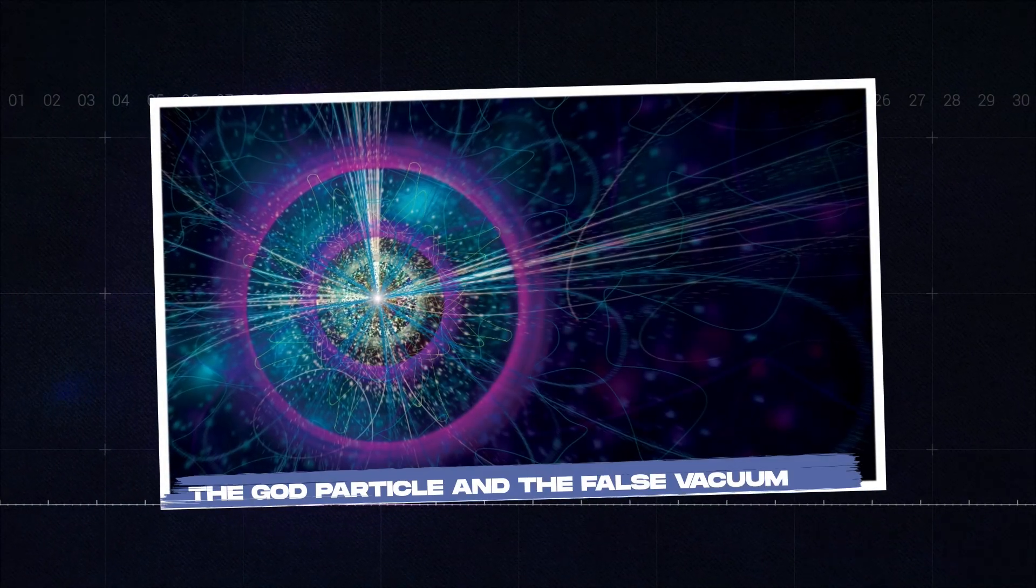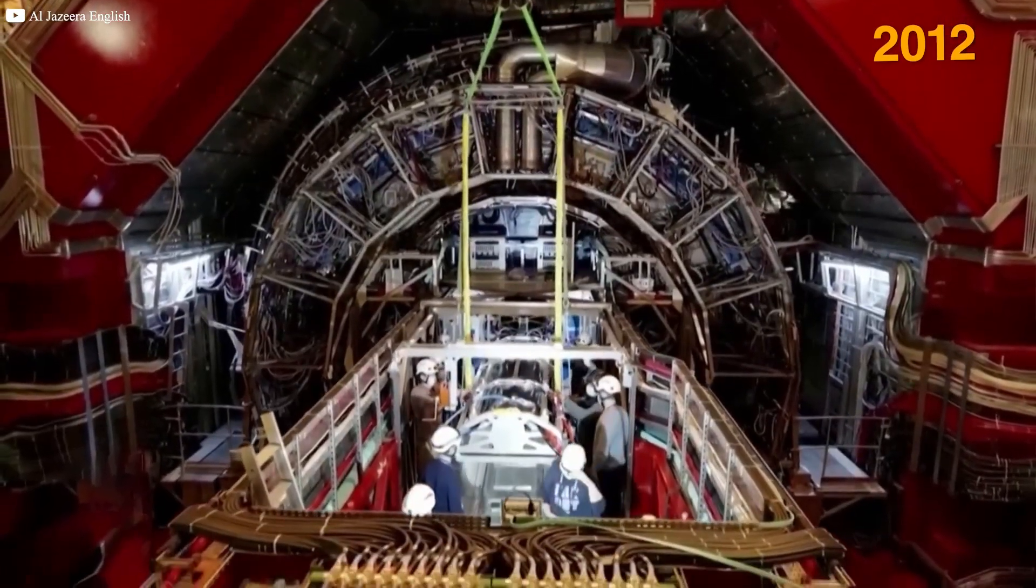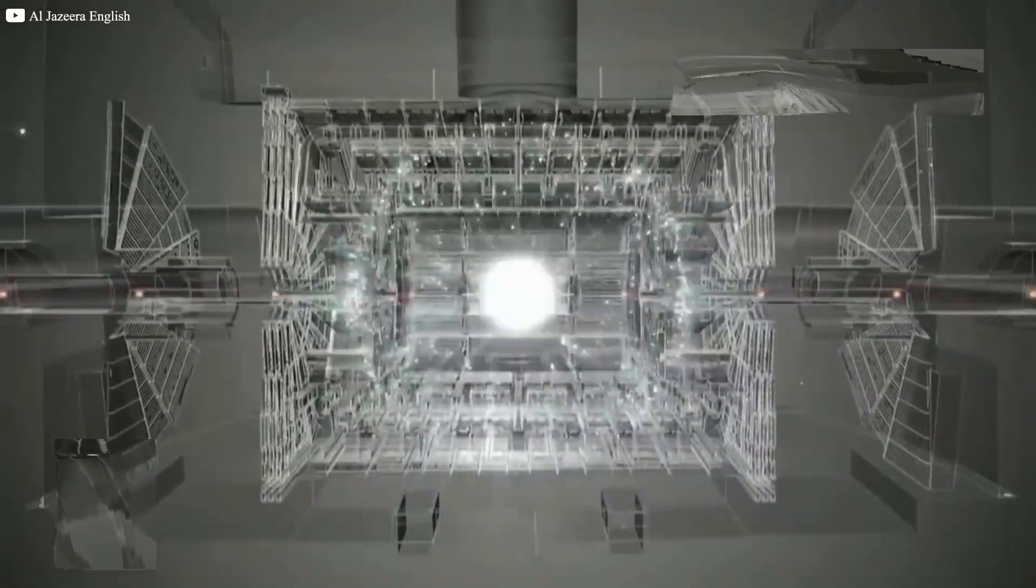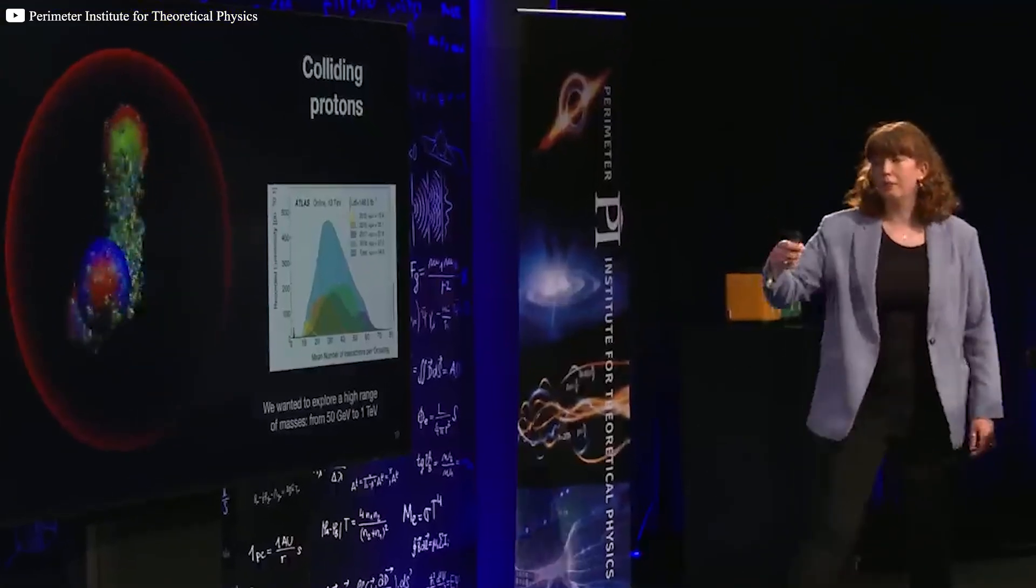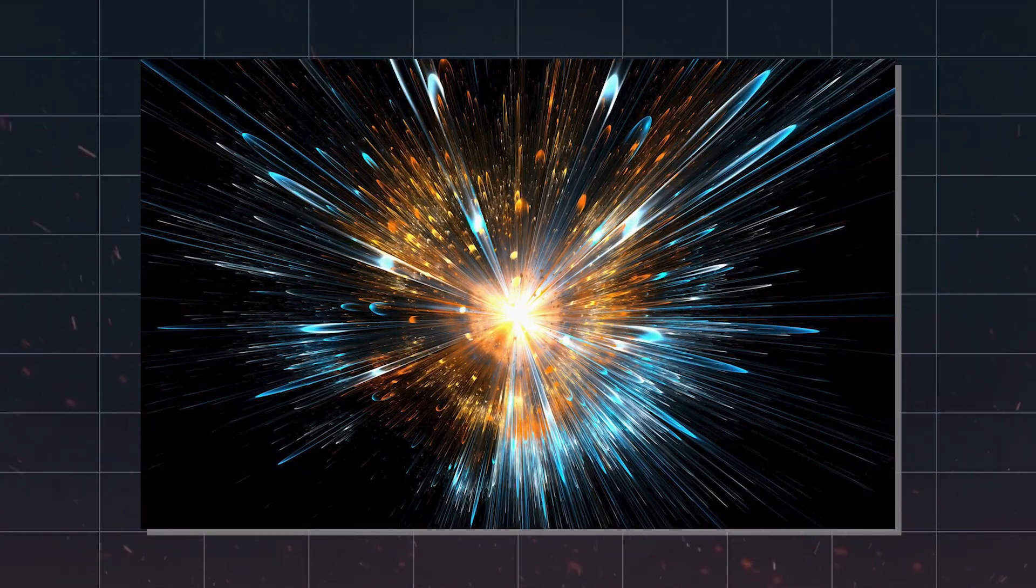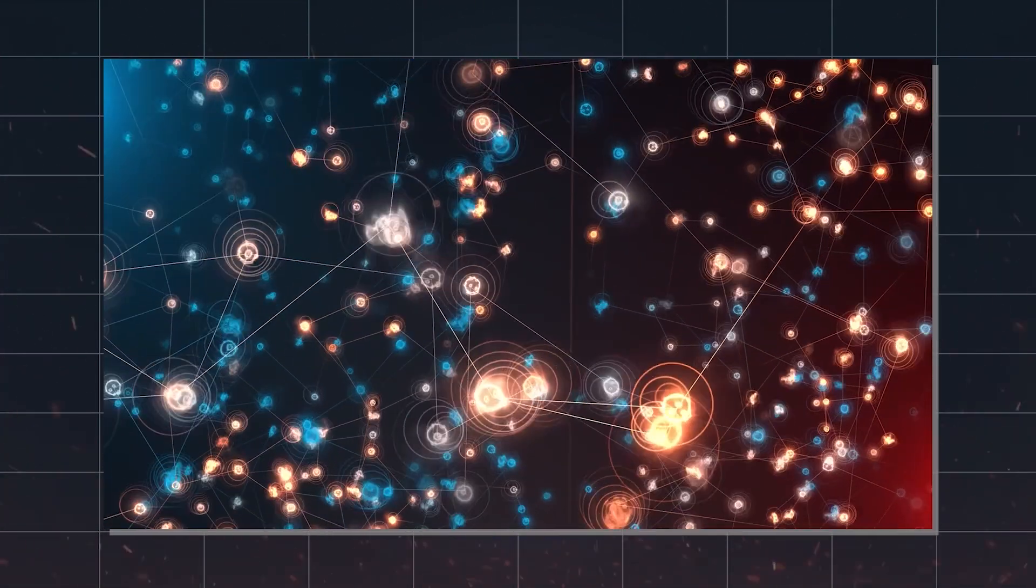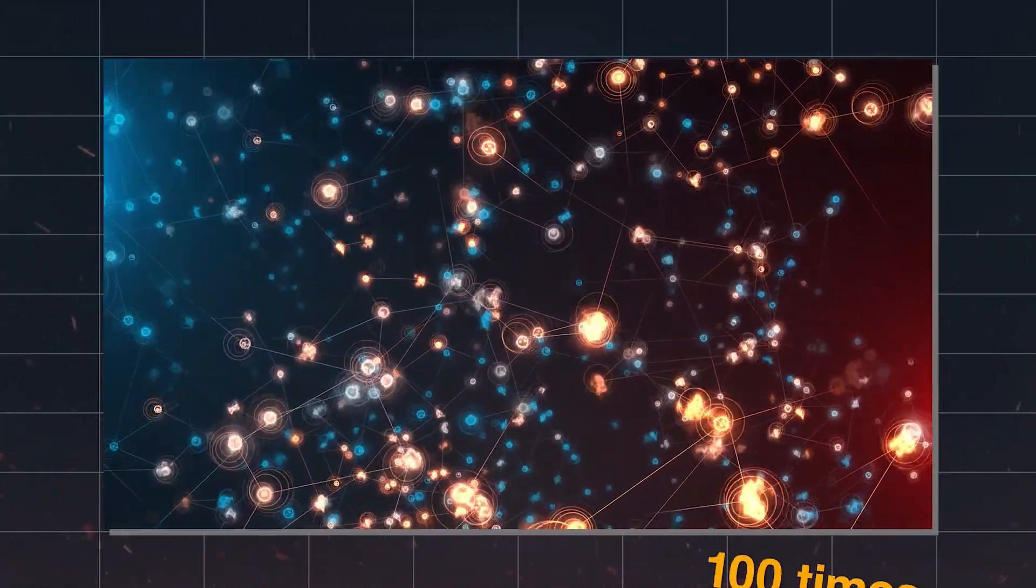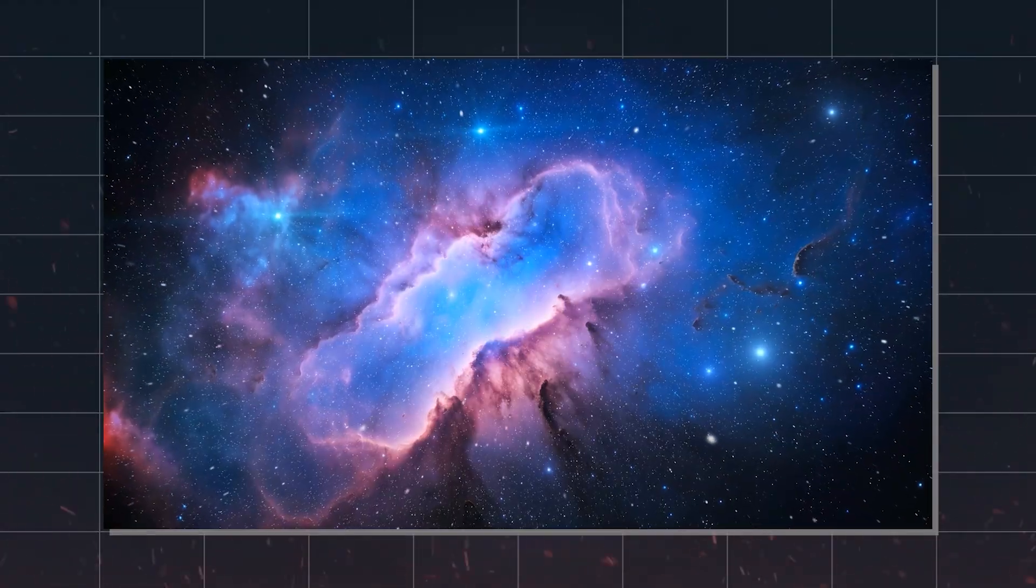The God Particle and the False Vacuum. In 2012, the Large Hadron Collider gave science one of its greatest rewards. Two research teams announced the discovery of the Higgs boson, often called the God Particle. For decades, physicists had searched for proof of the Higgs field, an invisible force that gives mass to particles. Without it, matter could not exist. The Higgs boson turned out to be heavier than many expected, more than 100 times the mass of a proton. That raised a disturbing possibility.